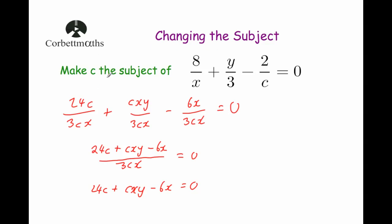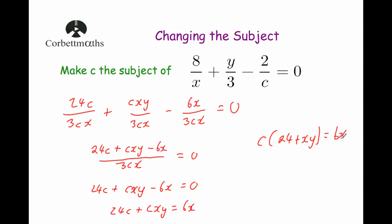Now we want to make c the subject, so we're going to bring everything without a c to the other side — adding 6x to both sides leaves us with 24c plus cxy equals 6x. Now we want c on its own, so let's factorize the left-hand side: c bracket 24 plus xy equals 6x. Finally, we divide both sides by 24 plus xy, and that leaves us with c equals 6x over 24 plus xy. And that's it.